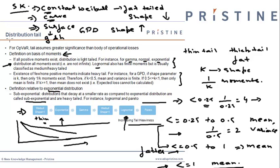We also looked at two definitions of how we define whether a distribution is fat-tailed or thin-tailed. This is important because in operational risk we are more concerned about the tail, as it is the tail which ultimately decides the operational risk capital. We looked at a rank ordering of different distributions on a scale of increasing tail heaviness.